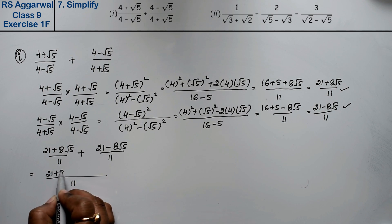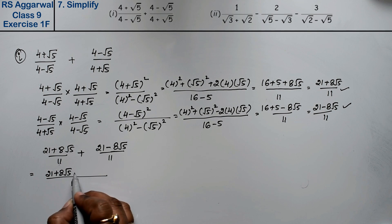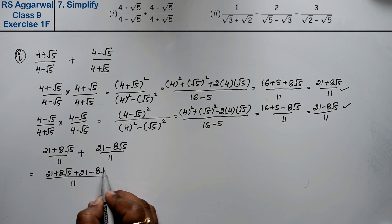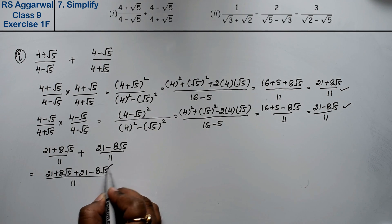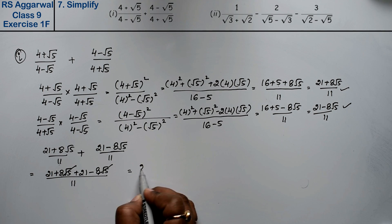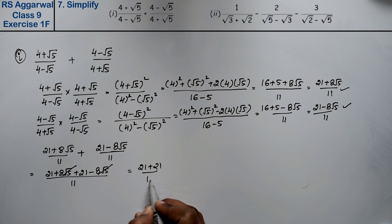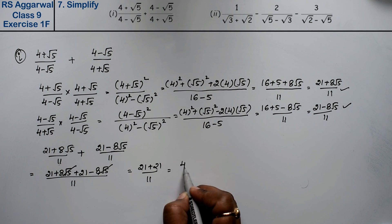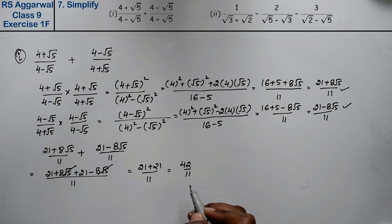The +8√5 and -8√5 cancel each other. So we get 21 + 21 = 42 over 11. The answer to Part 1 is 42/11.